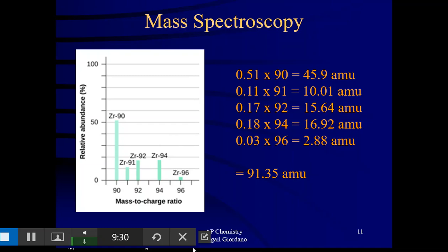Well, zirconium 94, well, zirconium anything, zirconium has 40 protons. So if the mass number is 94, 94 minus 40, that's 54. So that particular isotope must have 54 neutrons. And that's about as complex a question as you're going to see for mass spec data.